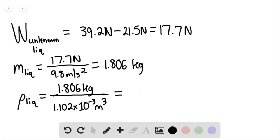We find that the density of the unknown liquid is 1.64 times 10 to the third kilograms per cubic meter. This is our final answer.